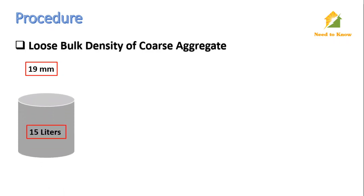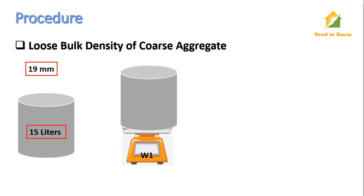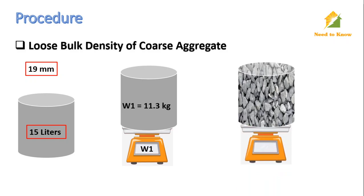First, we measure the loose bulk density of coarse aggregate. Our sample size is 19 mm, so we use a 15-liter capacity bucket. First, we measure the empty weight of the bucket — let it be W1. For example, the weight of the empty bucket is 11.1 kg. Now fill the bucket with aggregate loosely and weigh it again — let it be W2. The weight of the aggregate-filled bucket is 33.1 kg.